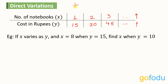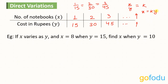1 upon 15 is equal to 2 upon 30, which equals 3 upon 45 — so this ratio remains constant. As the value of X increases, the value of Y also increases in such a way that the ratio X upon Y does not change. X upon Y equals K, or we can say X is equal to K times Y, where K is the proportionality constant. We can say X varies directly with Y, or X and Y are in direct proportion.